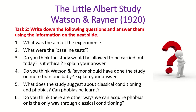The next couple of questions are based on your opinion. Do you think the study would be allowed to be carried out today — is it ethical? Essentially the psychologists have given Little Albert a phobia and he's now scared of all white fluffy objects. Do you think Watson and Rayner should have done the study on more than one baby? What does the study suggest about classical conditioning and phobias — can phobias be learnt through association? And finally, do you think there are any other ways we can acquire phobias, or is classical conditioning the only way? Think about evolution — maybe phobias are passed down through natural selection to enable us to survive.